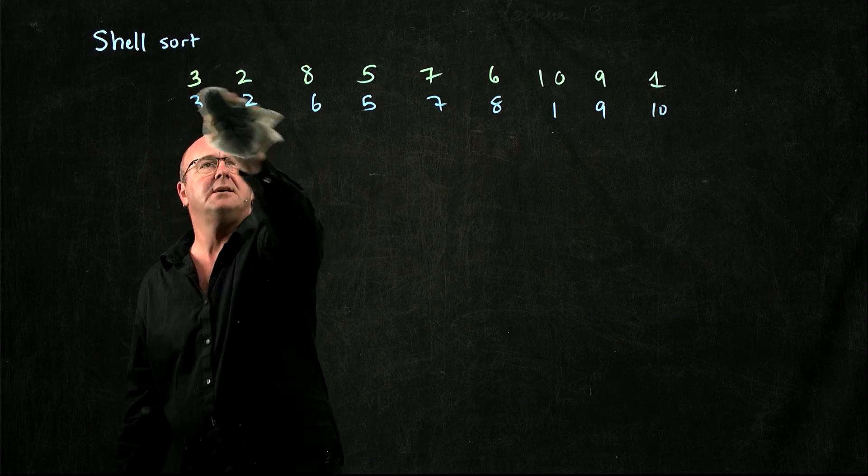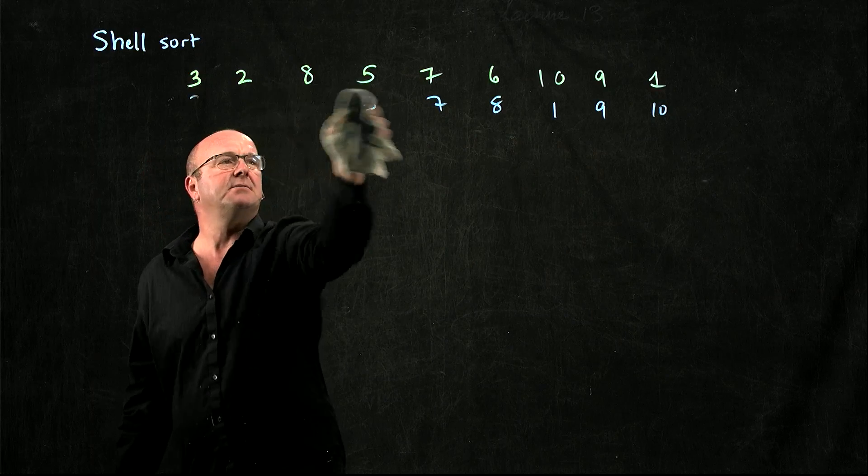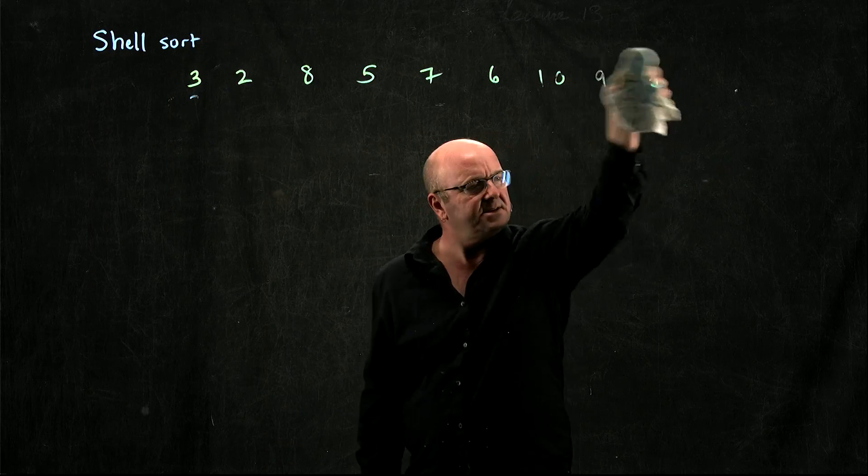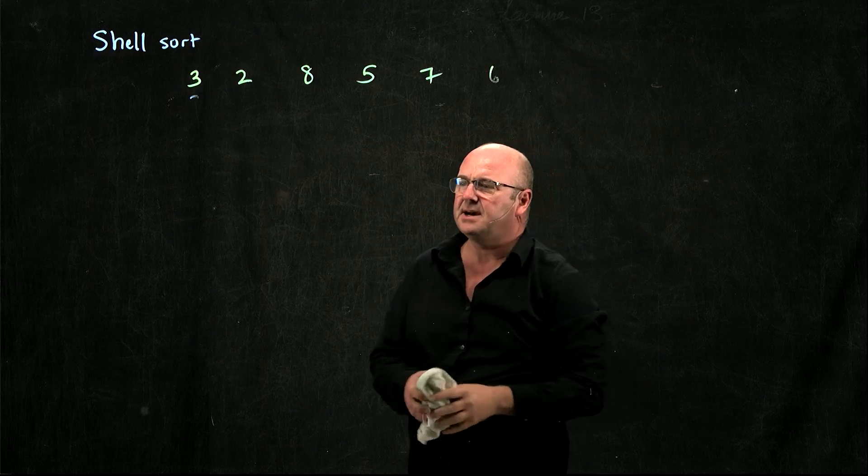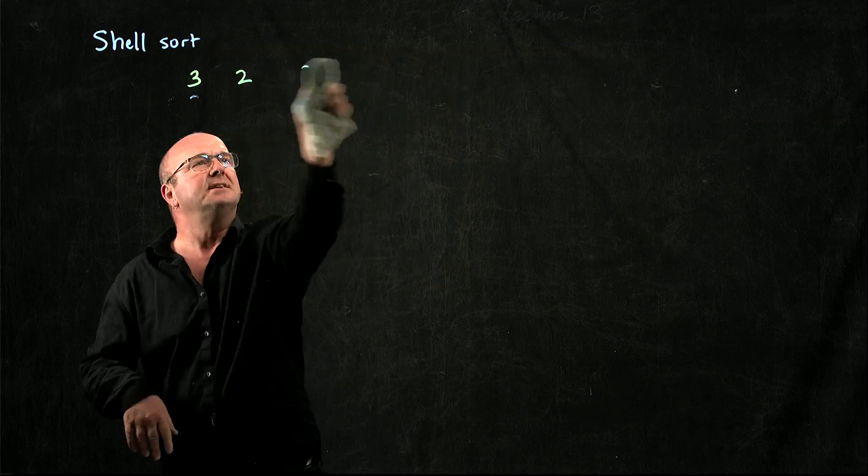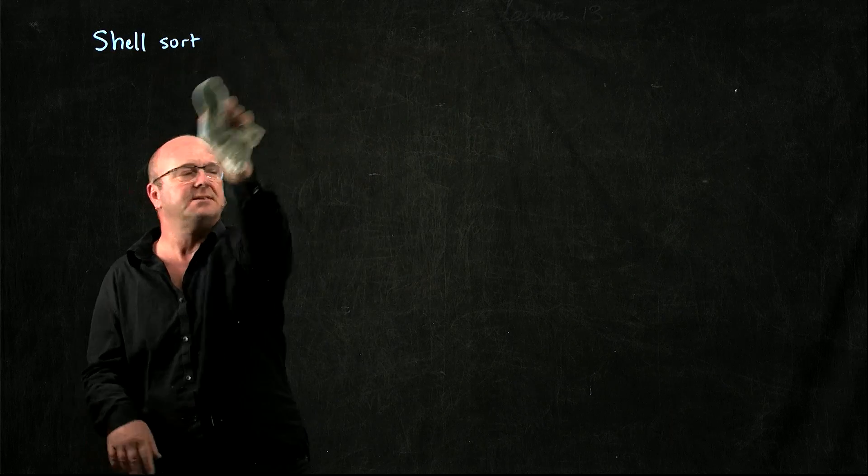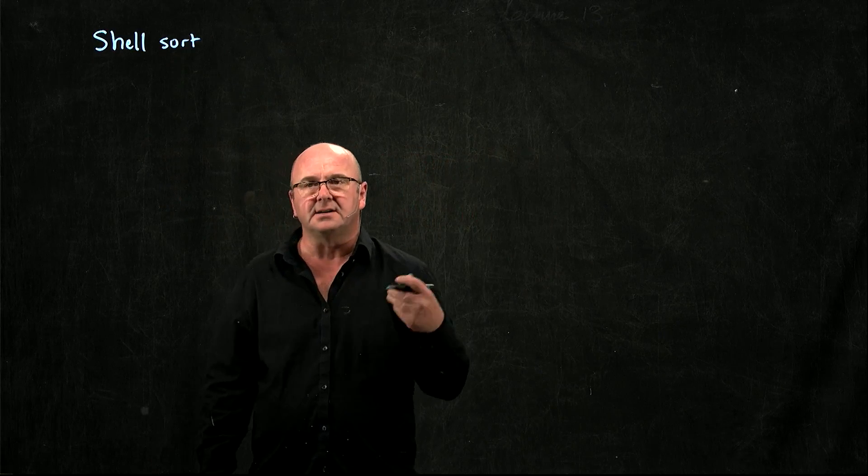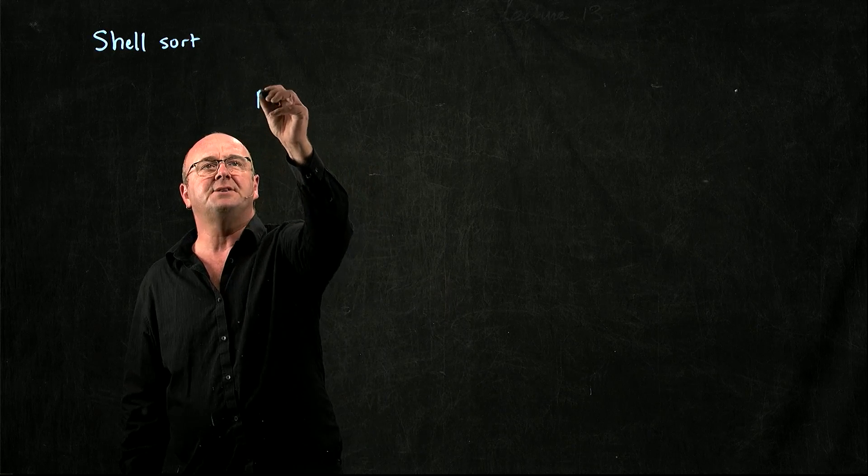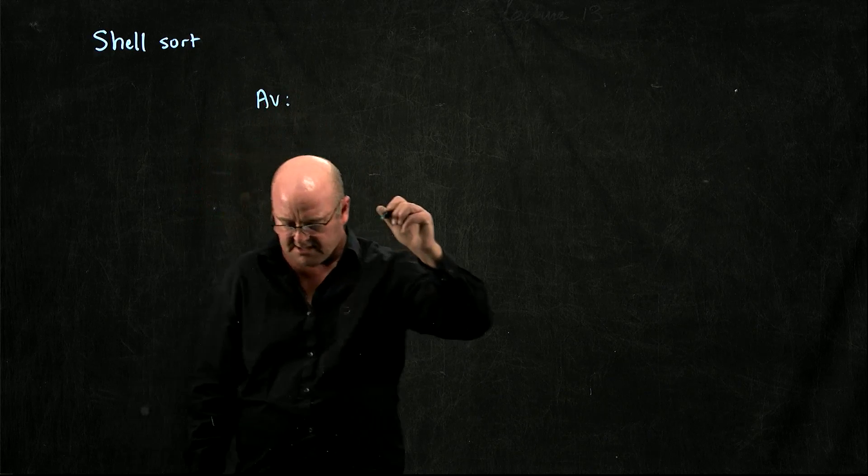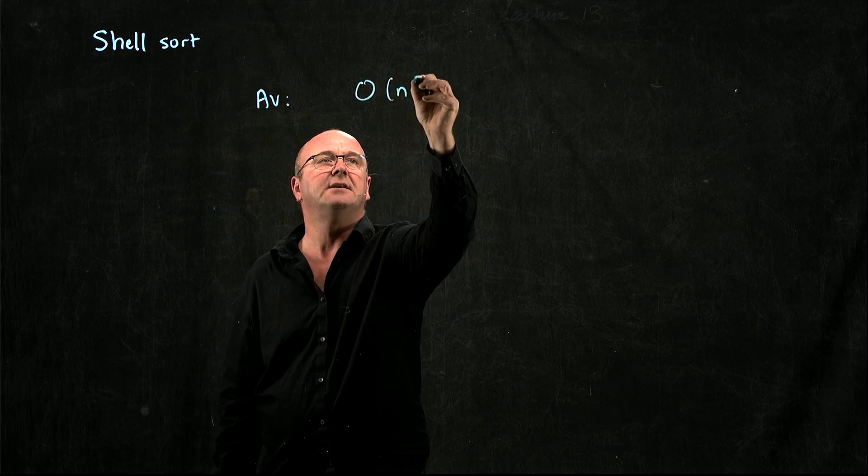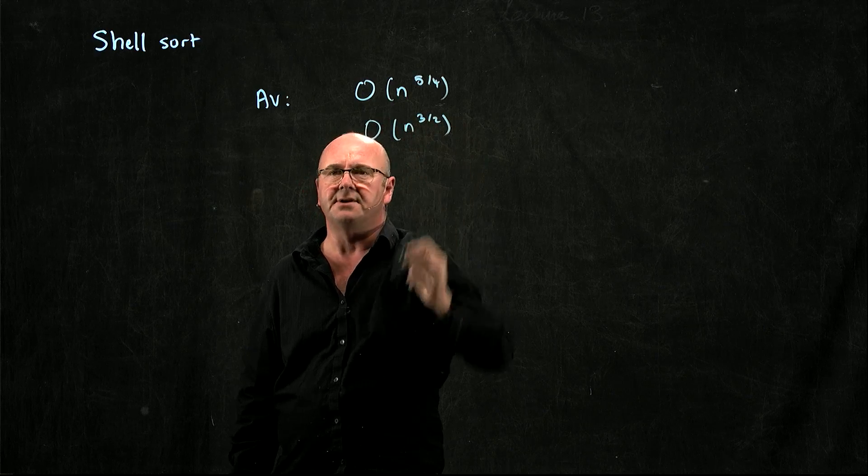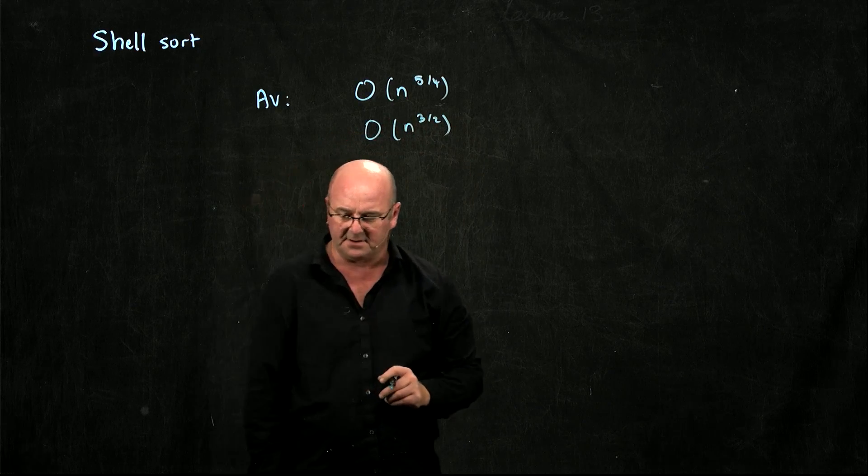But actually, the average complexity of the shell sort depends on the gap. And so if you have different gap sizes, you can change the complexity of the sort. Because that changes how many comparisons you have to do. Depending on who you ask and depending on what the gap size is, the average complexity in the shell sort is either big O of n to the 5 over 4, or big O of n to the 3 over 2. There's different answers depending on where you look.